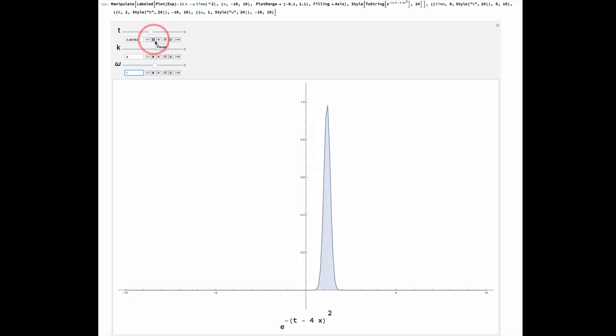And just as before, if we now run this wave forward in time, we can see it moving. But it's slowed down because the ratio of omega and k is now smaller.